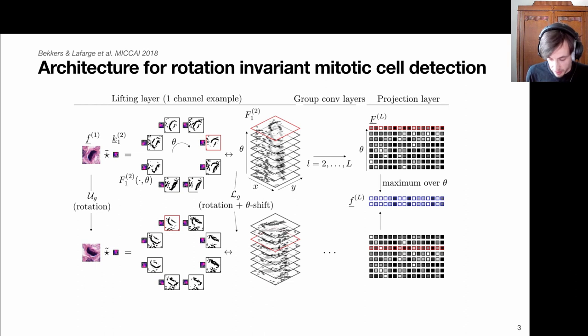We can always switch between the two using the regular representation of the group acting on these feature maps. We continue our group convolutions and in the end reduce it to a single feature vector. Because of this max pooling over theta, we end up with a truly rotation invariant feature vector that we can use to reliably classify these patches as either healthy or pathological.